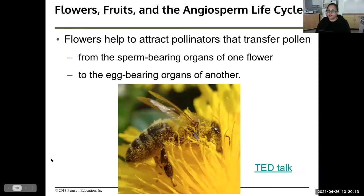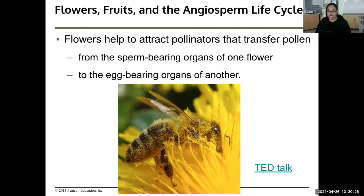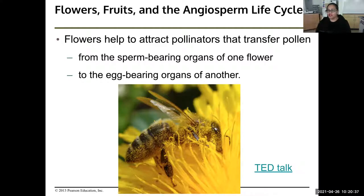Flowers help attract pollinators that transfer pollen from the sperm-bearing organs of one flower to the egg-bearing organs of another. A bee covered with yellow pollen dust flies from flower to flower, and some of that pollen falls off and fertilizes the next flower — that's how pollinators work.